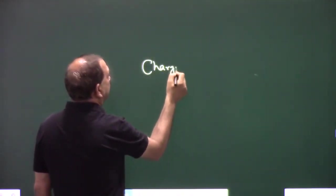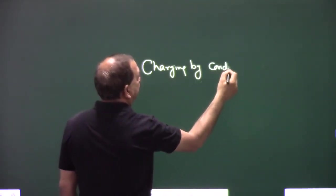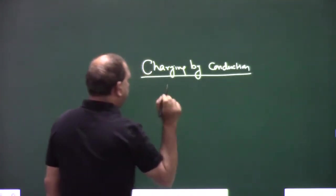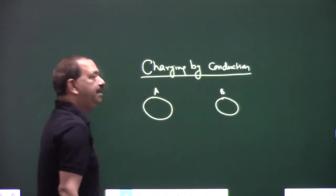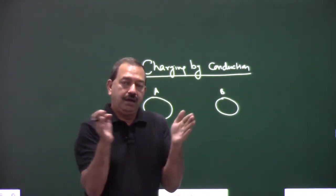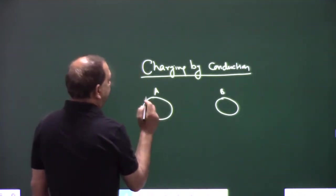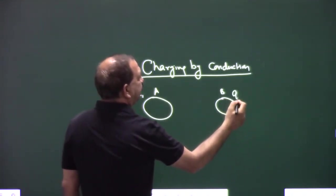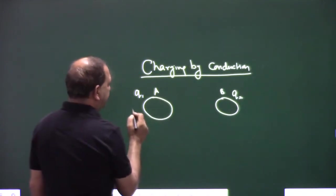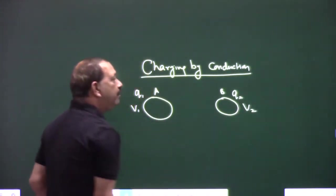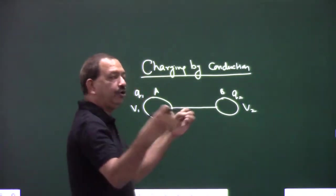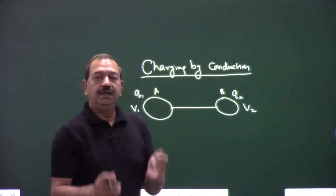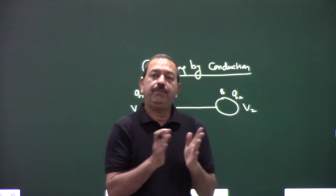Charging by conduction. These are the two bodies A and B. We have to charge them with contact. Let's say the potential is V1 and the potential is V2. Now if we connect them with wire or touch, then the charge will flow from high potential to low potential, till the potential becomes equal.